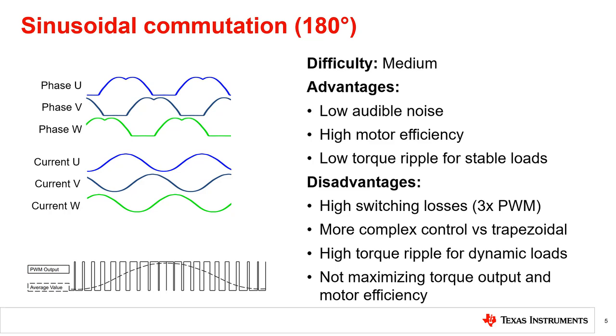Additionally, the torque ripple is not very good during dynamic loads such as motor startup and motor braking, in which the speed is changing. With sine control, the system is not reaching its full potential in terms of maximizing torque output and motor efficiency.